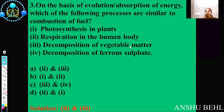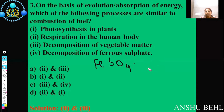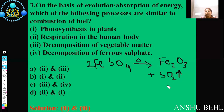Then we have decomposition of vegetable matter. In decomposition of vegetable matter, heat is evolved out and oxygen is supplied, so it is also an oxidation as well as exothermic reaction. Then we have decomposition of ferrous sulfate. If we take anhydrous ferrous sulfate and heat it, we get Fe2O3, sulfur dioxide, and sulfur trioxide gases. In this reaction, heat is given to the system, so it is endothermic in nature.